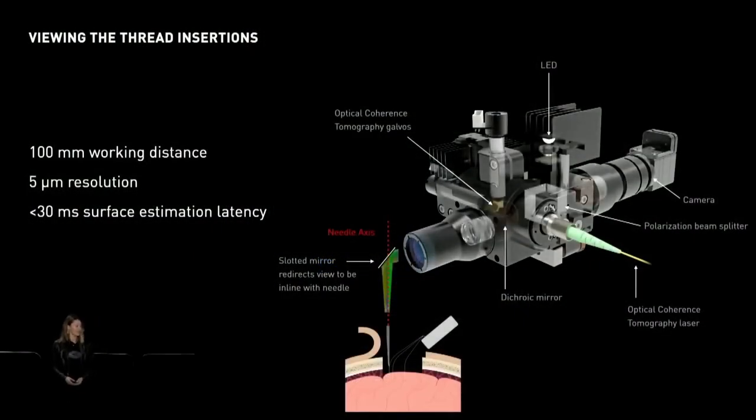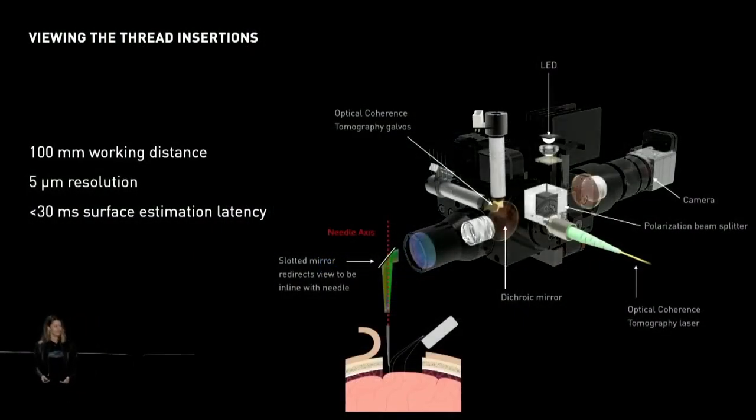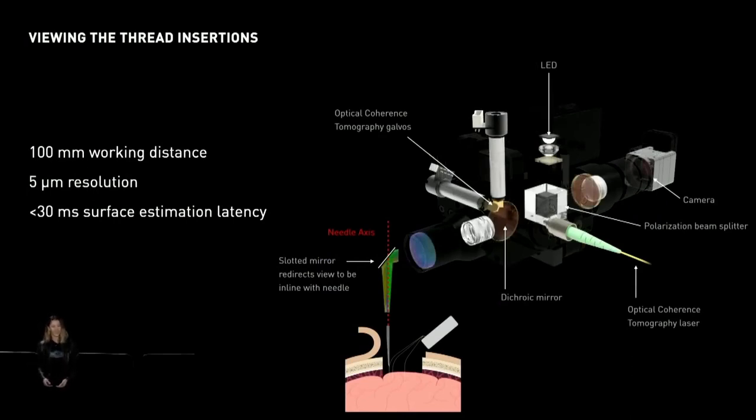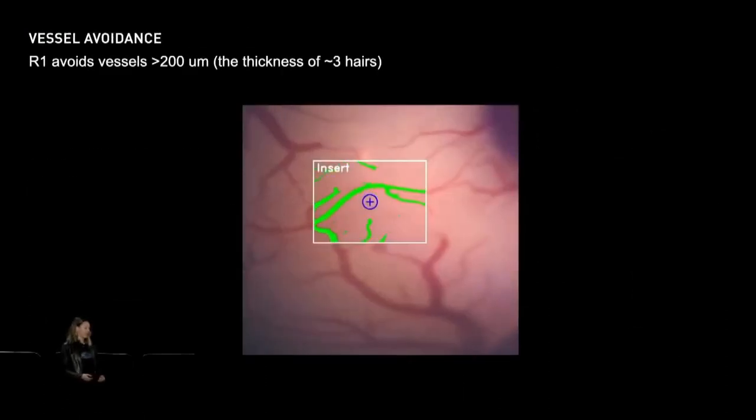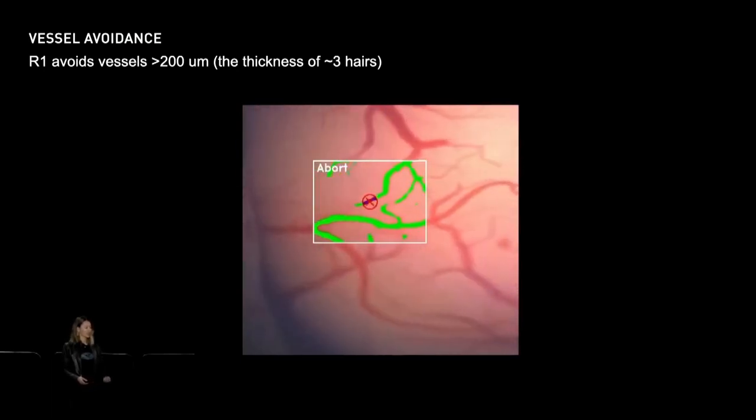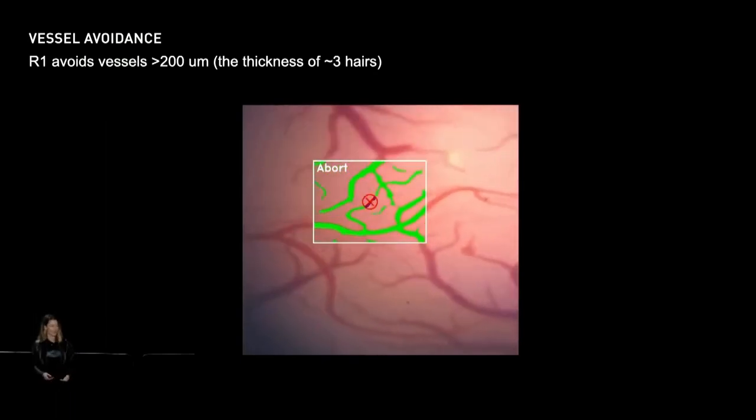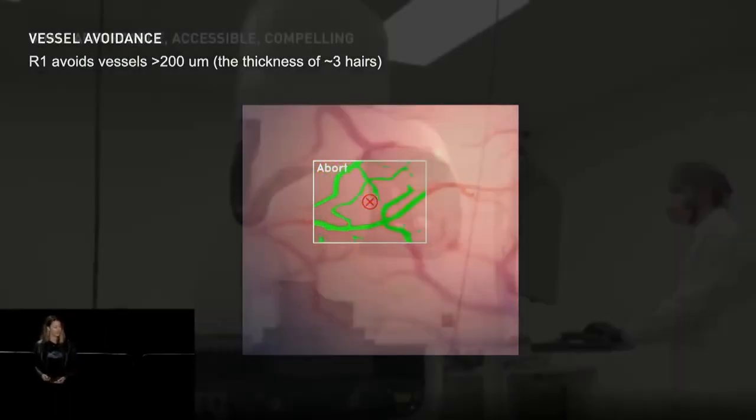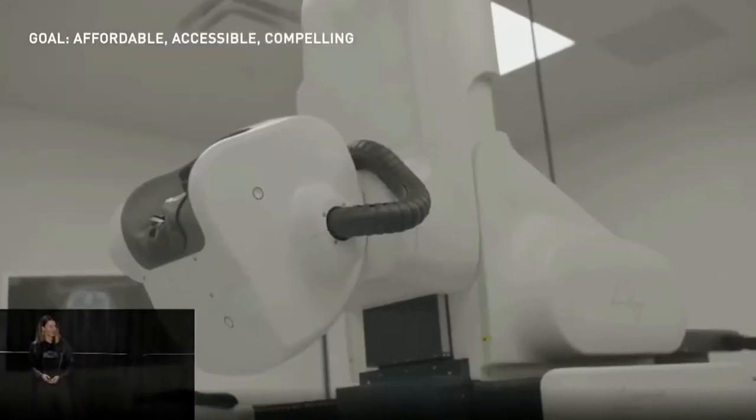The way that the team solved this is by putting all three of these optical paths into one optical stack using photon magic or polarization, whatever you want to call it. And that enables us to do vessel avoidance in real time. As I mentioned, the brain is moving, and where we place targets in the beginning may not be where you want to insert at the moment the needle's going down there. So the robot can actually detect the vessels and then determine if we're going to insert onto a vessel or not, if it's safe to insert, and then that way we can avoid inserting onto major vessels. And that brings us to the robot that we have here today.